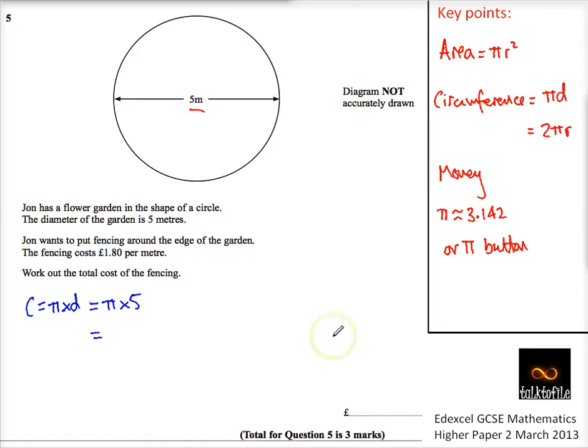So I'm just using the pi button on my calculator, so it's times five. And I come out with, as a decimal, it's 15.70796327 meters.